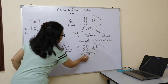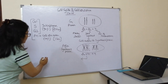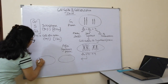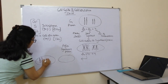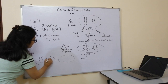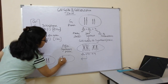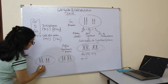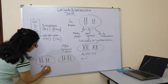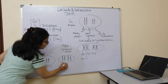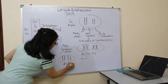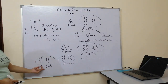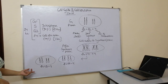After cell division, two cells are formed, each with 2N = 2C = 4. This was a mitotic cell division, where the number of chromosomes remains the same even after division.